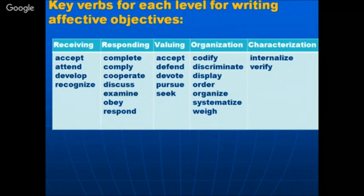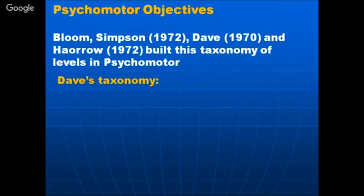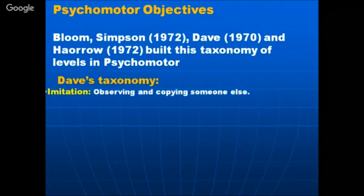For psychomotor objectives, Bloom, Simpson, Dave, Harrow, and Granlert and many others built taxonomies for psychomotor levels. I am going to share Dave's taxonomy, which he derived from Bloom's taxonomy — it is the most popular taxonomy among educationists. Dave further classified different levels in the psychomotor domain for developing physical abilities in students.